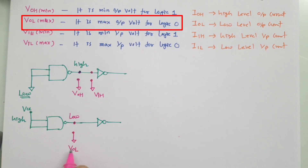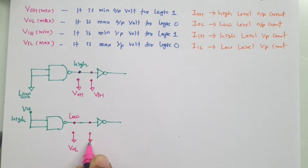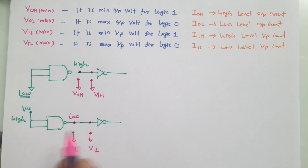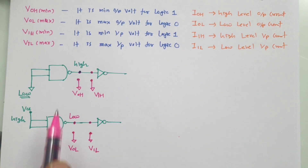The output has to be maximum of VOL, and that is what we are giving to the input of this NOT gate. So the input has to be VIL at max — that has to be VIL at max — then only a proper output will come at this end of the NOT gate. That is the voltage range defined here.